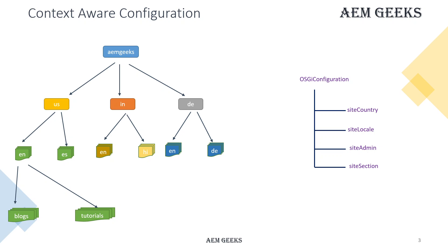You must understand that OSGI configurations are written for run modes — your environment — not for site-specific needs. They are bound to run modes. To resolve this problem, where you need a different configuration at each site level, you use context-aware configuration.